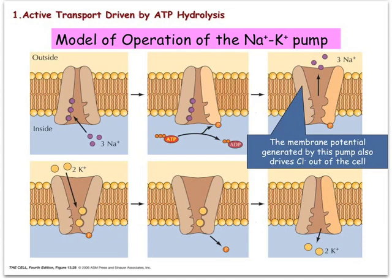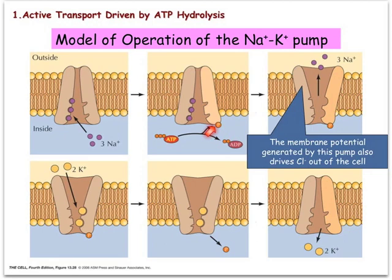The sodium-potassium pump works by undergoing a cyclic series of conformational changes. Initially, the pump is in a conformation that exposes a cavity inside the pump to the intracellular environment, and also exposes three high-affinity binding sites for sodium to the intracellular environment. This leads to the binding of sodium ions to those high-affinity sites, followed by the phosphorylation of the pump by a cellular kinase — this is the step that involves the use of ATP. The phosphorylation triggers a conformational change that exposes the cavity to the extracellular environment and changes the affinity of the sodium binding sites, triggering the release of sodium ions to the outside of the cell.